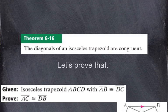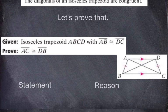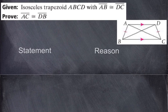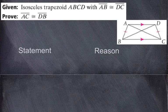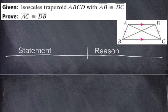The diagonals of an isosceles trapezoid are congruent. We're going to do a two-column proof to prove that. The diagonals of an isosceles trapezoid are congruent. Here's our diagram — isosceles trapezoid ABCD. Since it's isosceles, the two legs are congruent: AB is congruent to CD. Let's start the proof.